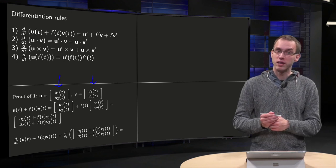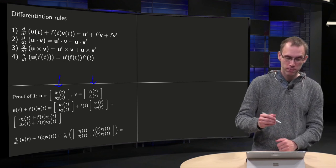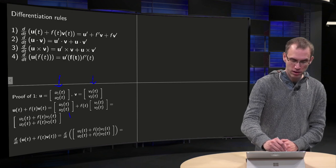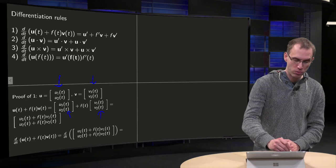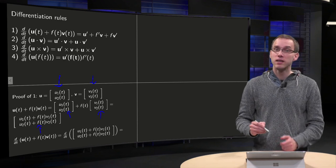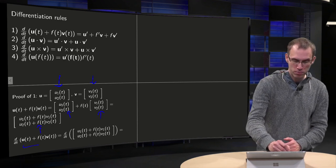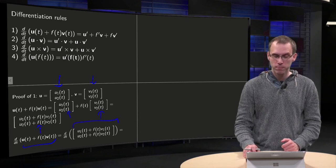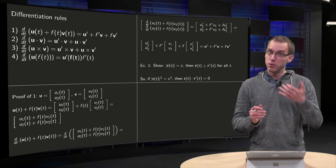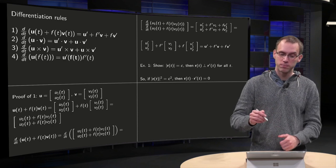So what do we get for u plus f times v? We write down what u is, we write down what v is, and we combine it into one vector. Then d/dt of u plus f times v is the d/dt of this big vector over here. And how do you compute the d/dt of such a big vector? Well, you need to take the d/dt of this component over here and over there.